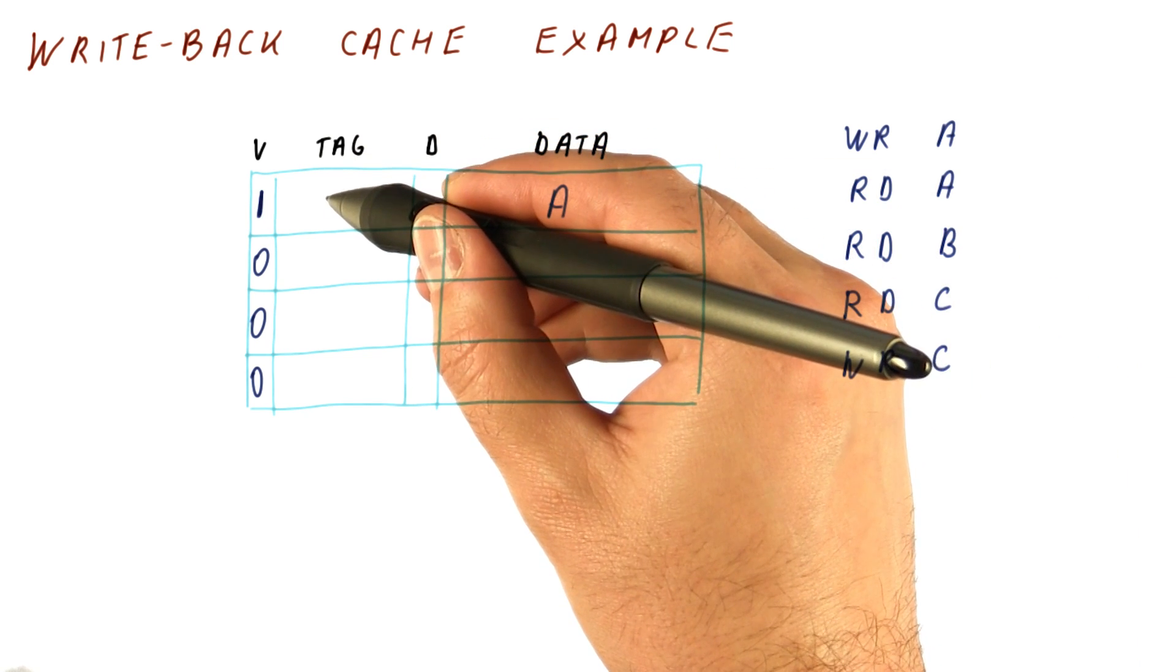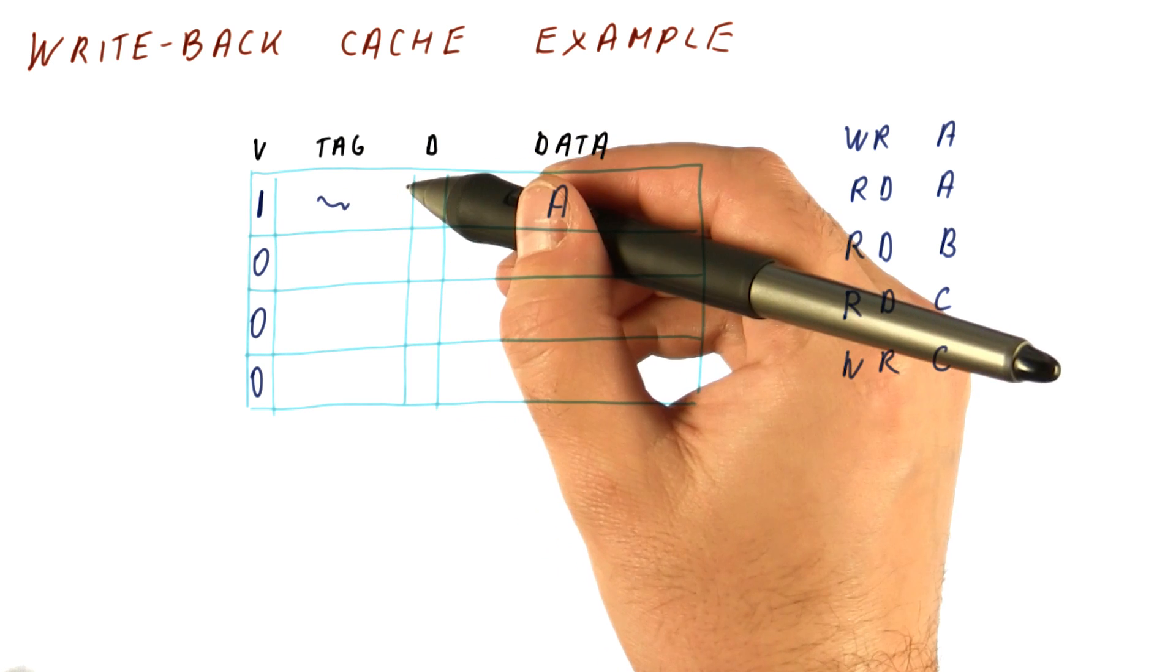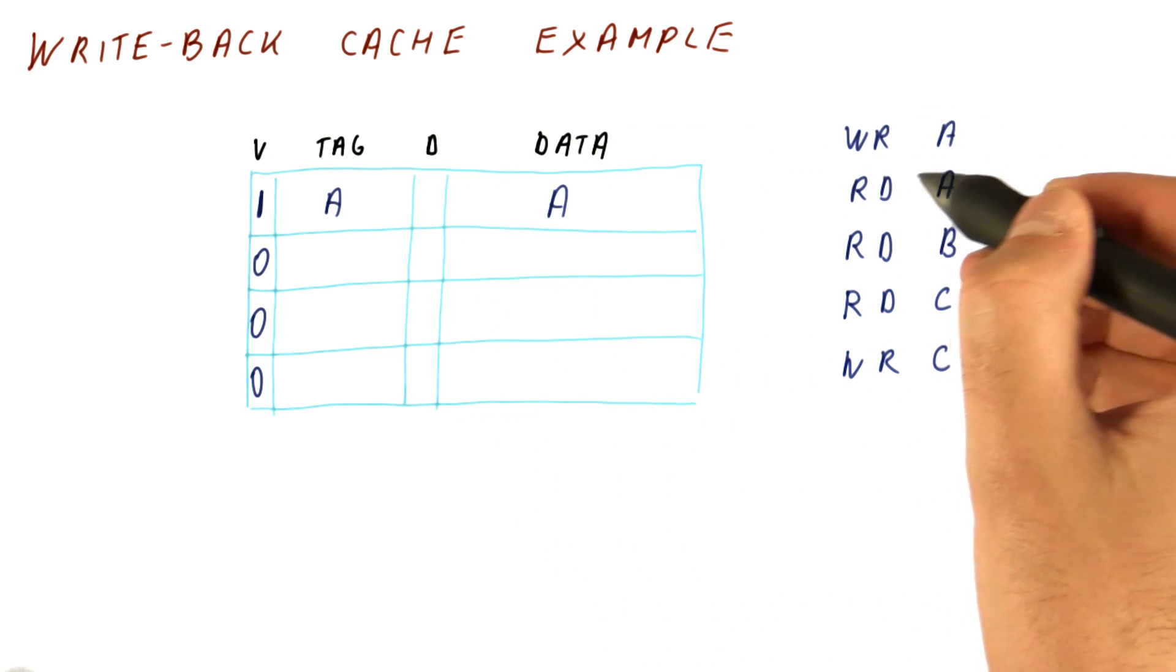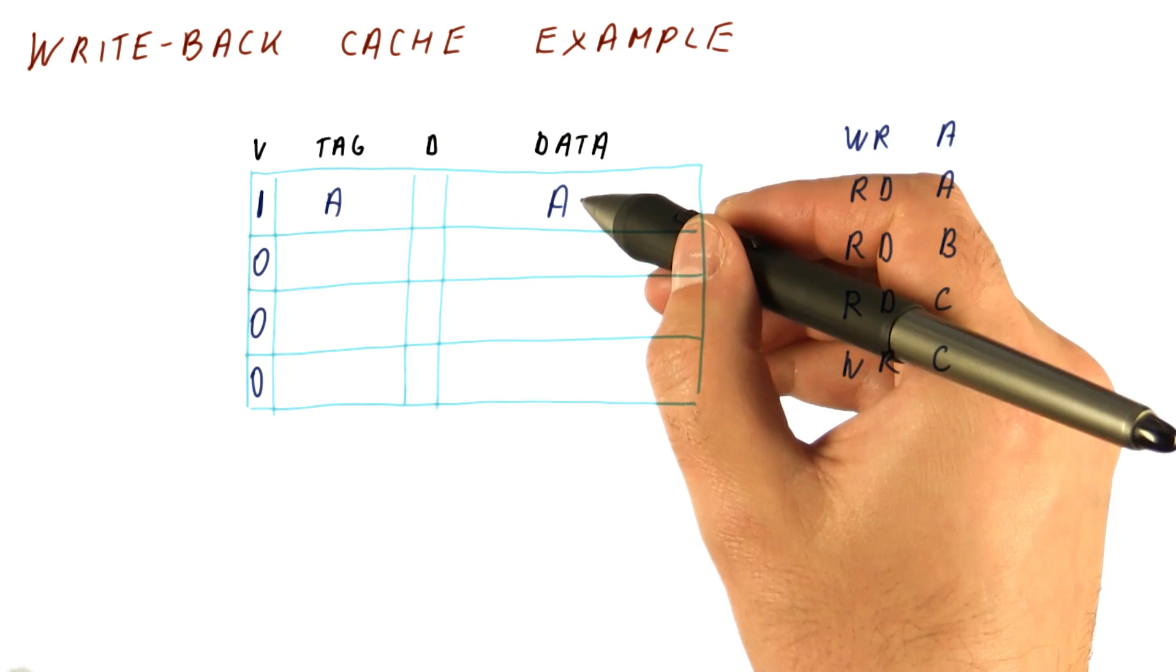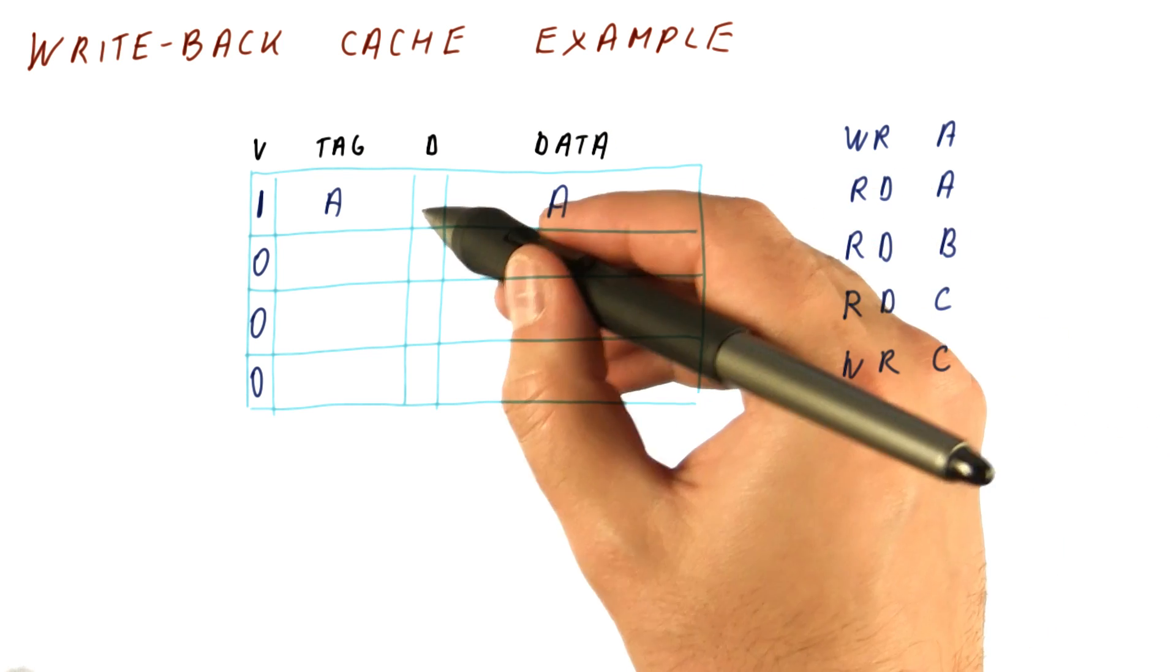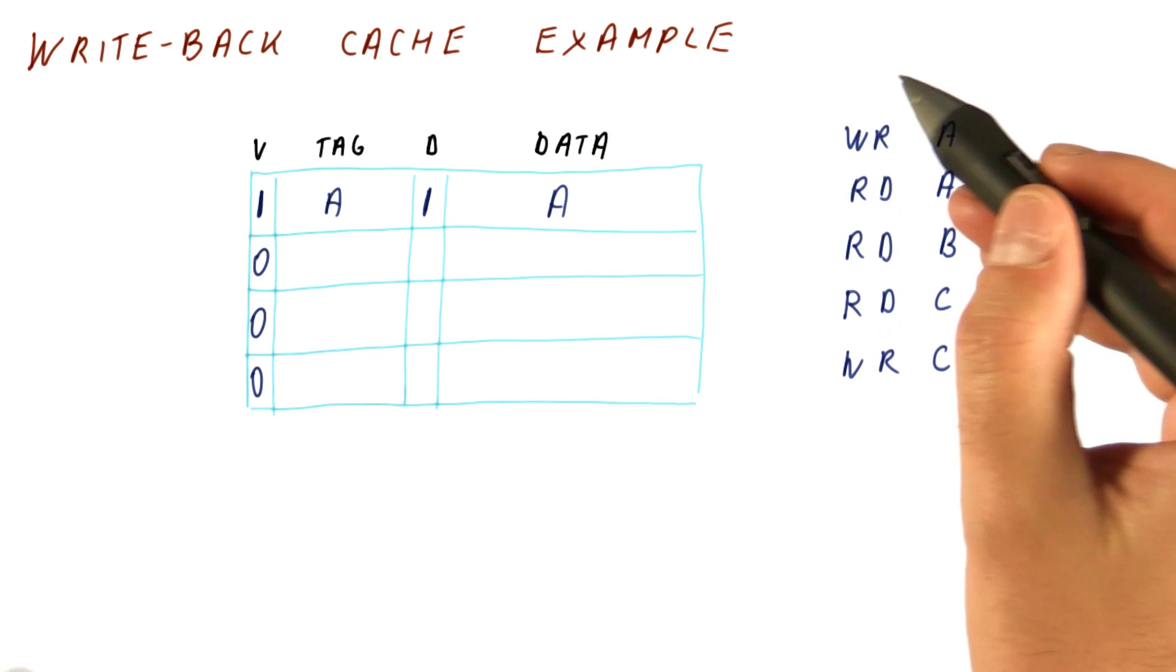We will change the valid bit to 1, and we will change the tag to correspond to A. Because this is a write, the processor, as soon as the data is brought in, will write it and the dirty bit will be set to 1.